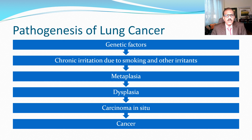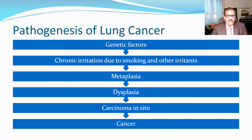After carcinoma in situ, a full-fledged cancer develops. It can then go to the regional lymph nodes, the neighboring lung, the lung parenchyma, and of course it goes to any part of the body — the brain, bones, liver, adrenals, and everywhere. That is when it becomes very, very serious.